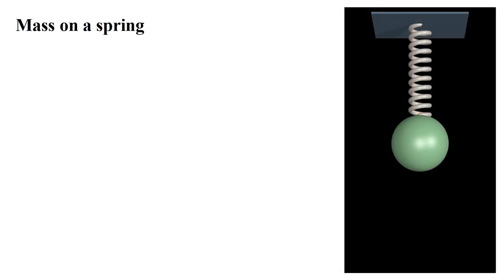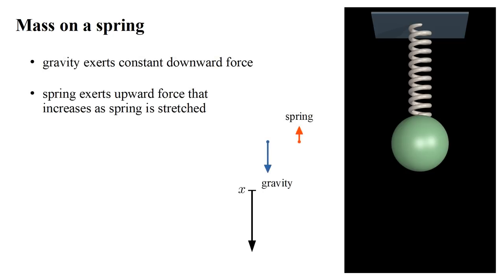Let's see how these ideas work in a system with a non-gravitational force. Specifically, let's consider a mass suspended by a spring. Let x be the downward displacement of the mass. Gravity exerts a constant downward force. The spring exerts an upward force that increases as the spring is stretched. The sum of these is the net force, let's call it F(x).